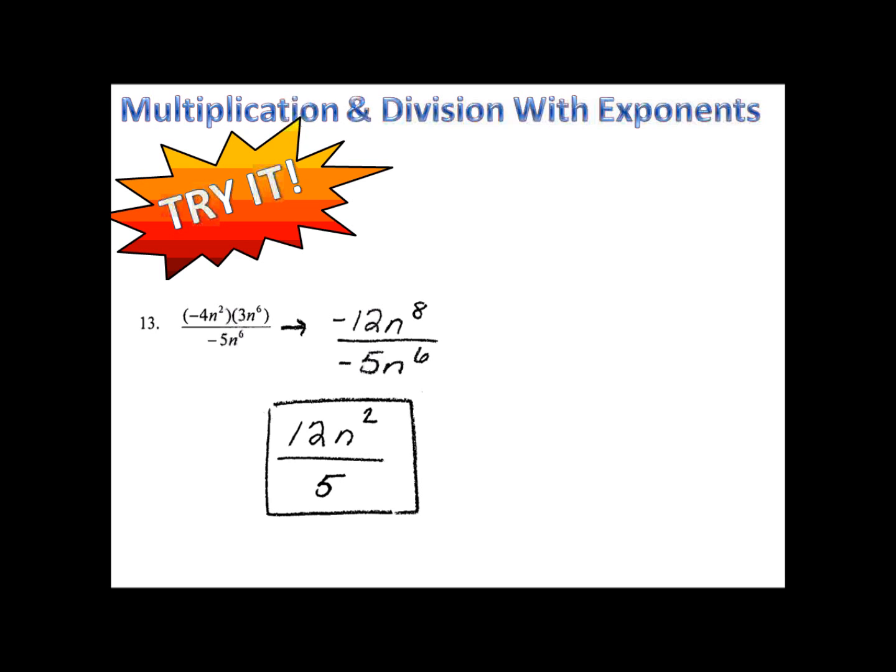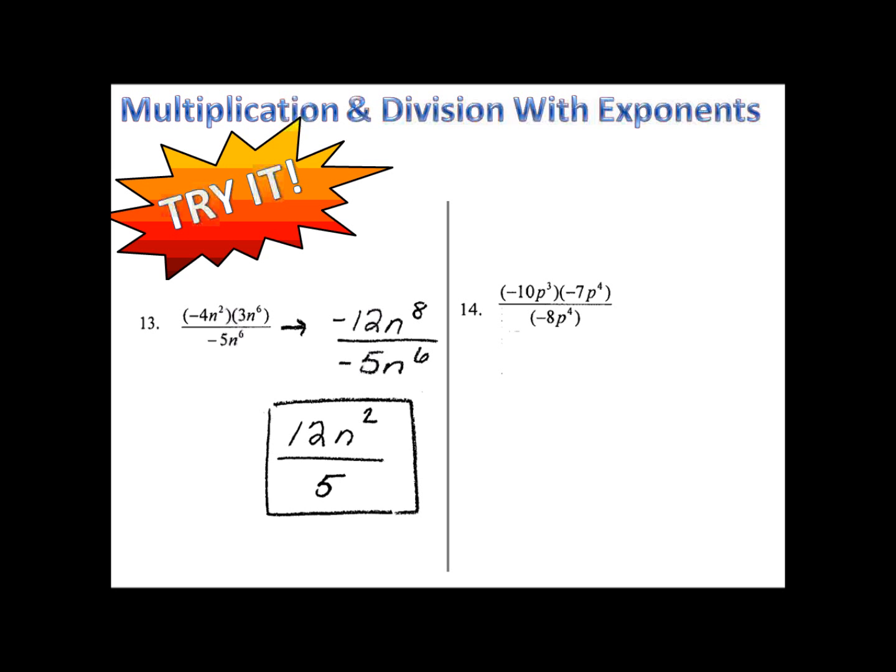Number 14, our final example. Please pause the video here and give this one a try. Let's see how you did. Negative 10 times negative 7 is 70, p to the seventh. On the bottom, we have negative 8p to the fourth.